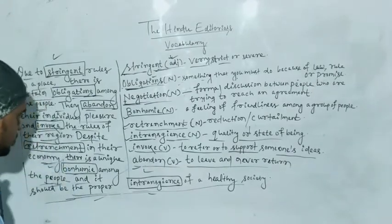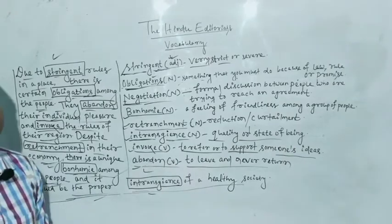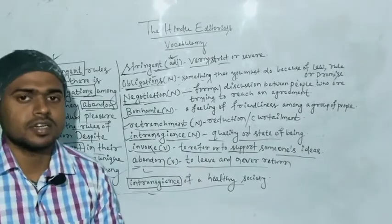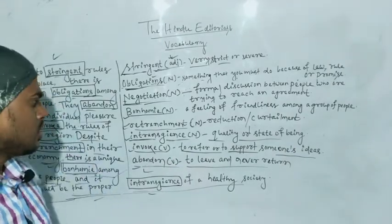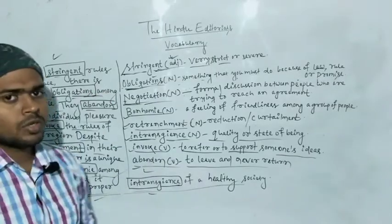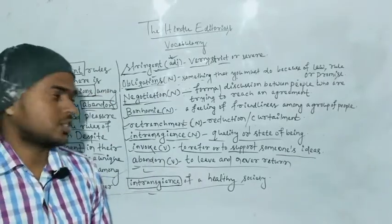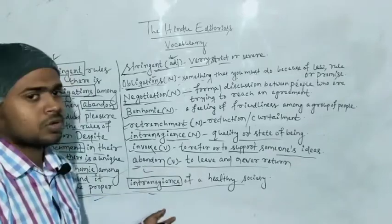After that, there is an economic downfall between people. They maintain their friendships. For any type of healthy society, they need to have this quality of intransigence.